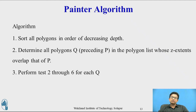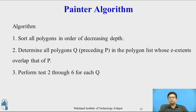If two polygons' z-extents overlap, we need to perform tests 2 to 6. If z-extents do not overlap, then we can directly display the polygon on the viewport. The problem arises when the z-extents of two polygons overlap; then in Step 3, we need to perform tests 2 to 6 for each polygon Q.